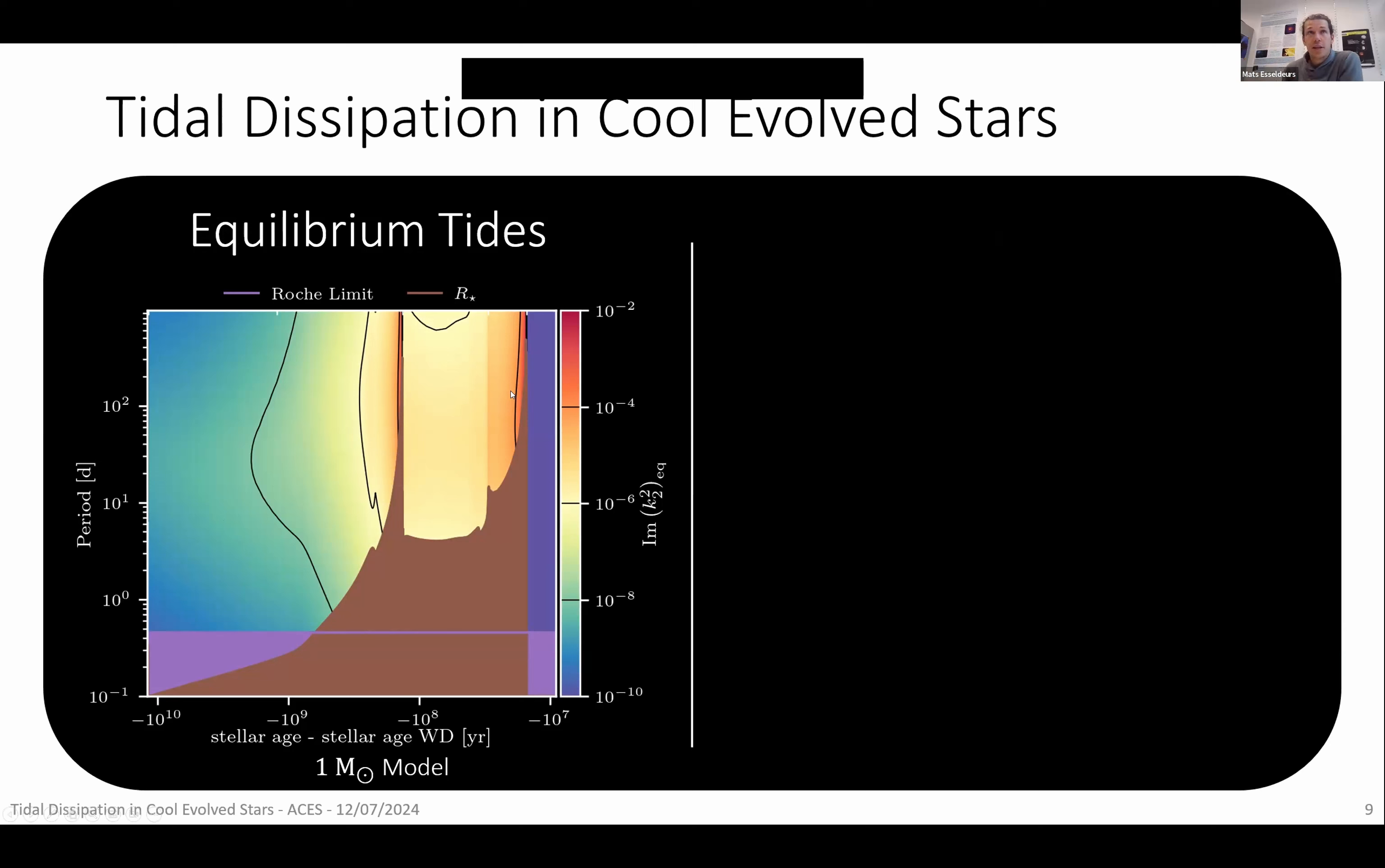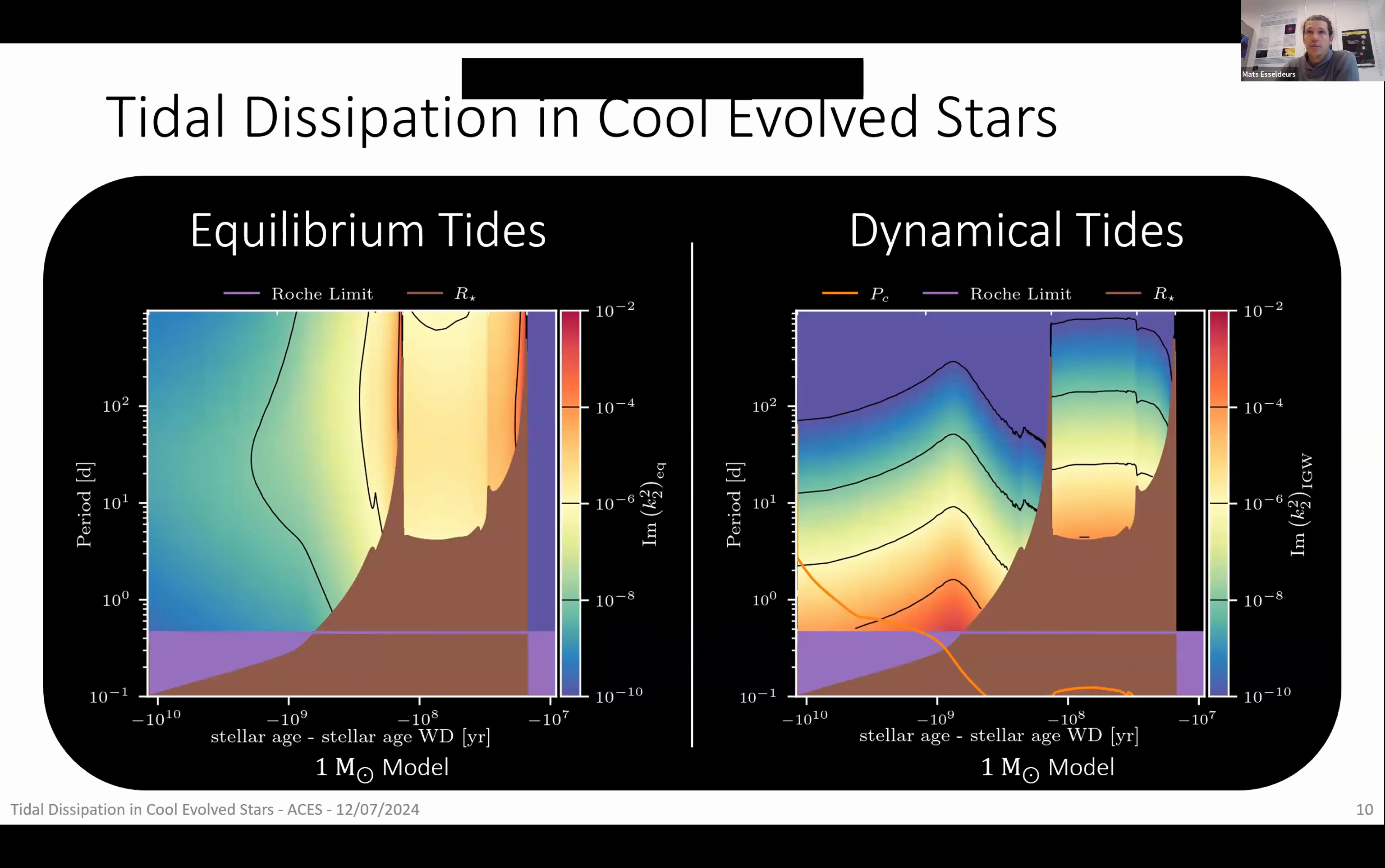This is not the case anymore when you go to the dynamical tide. In the dynamical tide there is a strong dependence on orbital period, as this allows for waves at different frequencies, where you have strong tides at low orbital periods and weaker tides at larger orbital periods. And also it doesn't really increase anymore when you increase the stellar radius. At some point it even decreases. So during the RGB and the AGB it will be less significant.